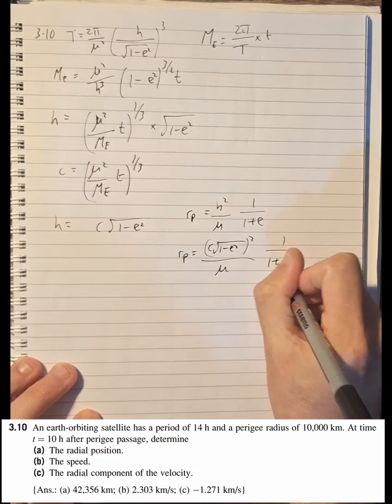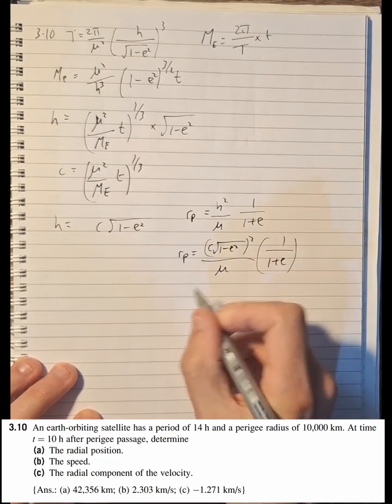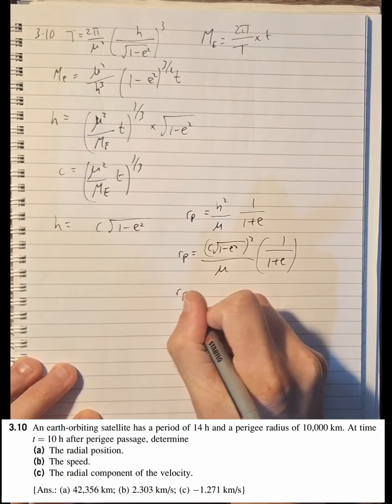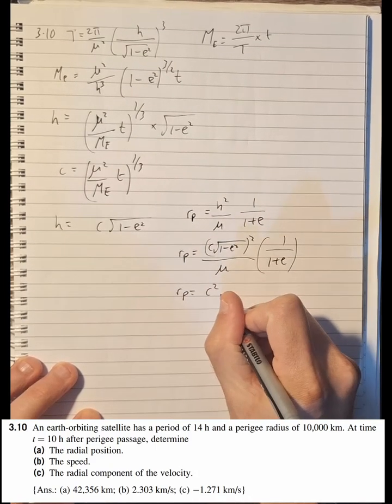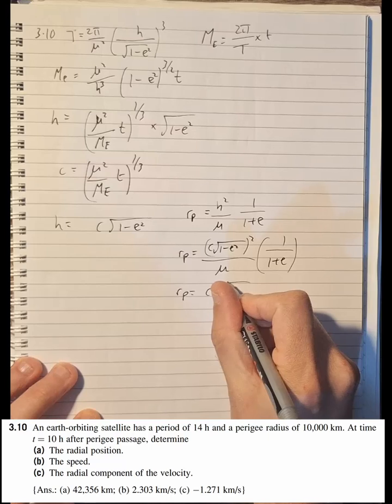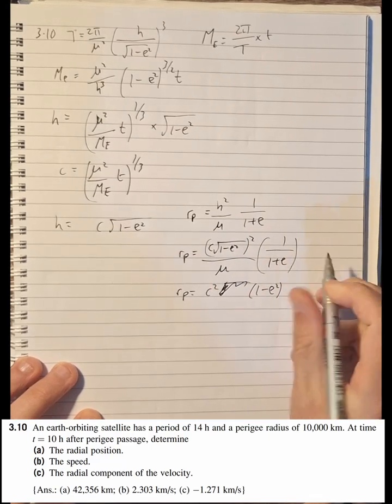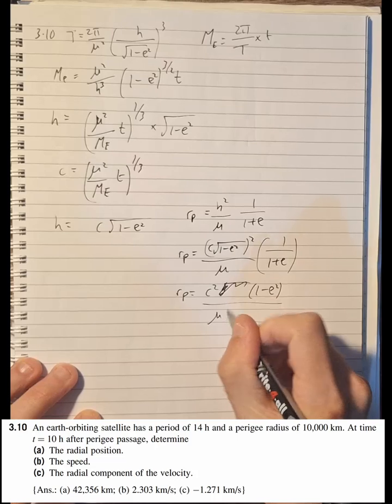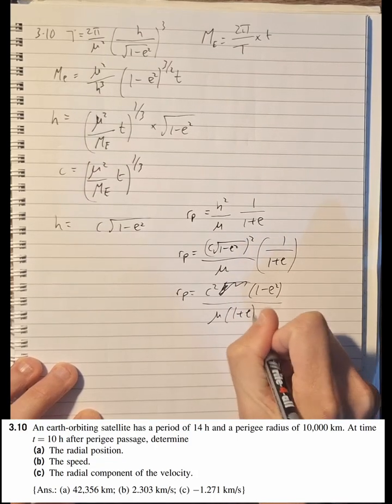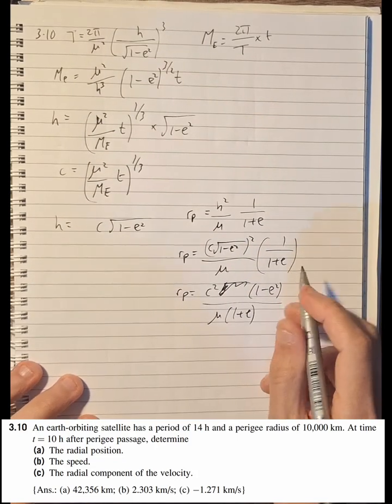And then that gives us r_p = c²/μ × (1-e²)/(1+e). And now we're going to try and solve for e because this is a quadratic.